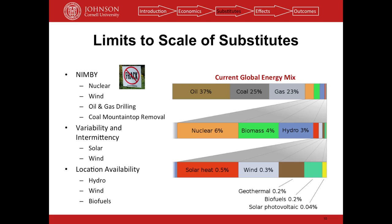Beyond infeasibility, you'd run into other limits to scale. First is NIMBY — not in my backyard. People in Ithaca worry about gas fracking polluting groundwater. Similarly with nuclear, a lot of people don't want a reactor near them. Wind: the Kennedys famously didn't want wind turbines off Nantucket because it ruined their view. And with coal mountaintop removal, if you live near nice mountains, you might oppose blowing them up.